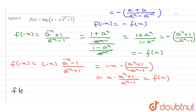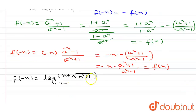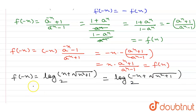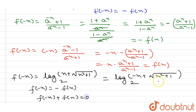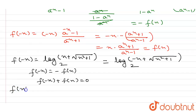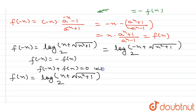For the last option, f(x) = log₂(x + √(x² + 1)). If I put −x, I get f(−x) = log₂(−x + √(x² + 1)). To check if this is odd, I need to verify whether f(x) + f(−x) = 0, which corresponds to the property that f(−x) = −f(x) for odd functions.